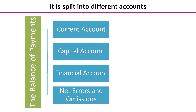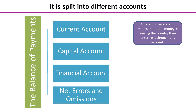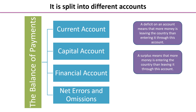The balance of payments is split into four different accounts: the current account, the capital account, the financial account, and the net errors and omissions. When we have a deficit on any one of the individual accounts, what that means is that more money is leaving the country than is entering it through that particular part of the account. A surplus means the opposite — more money is coming in than is leaving through that part of the account.